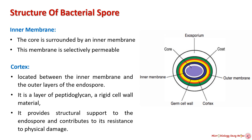The inner membrane surrounds the core, separating it from the rest of the endospore structure. This membrane is selectively permeable, which means it only allows essential molecules to enter while blocking others. It helps regulate the movement of molecules in and out of the core.